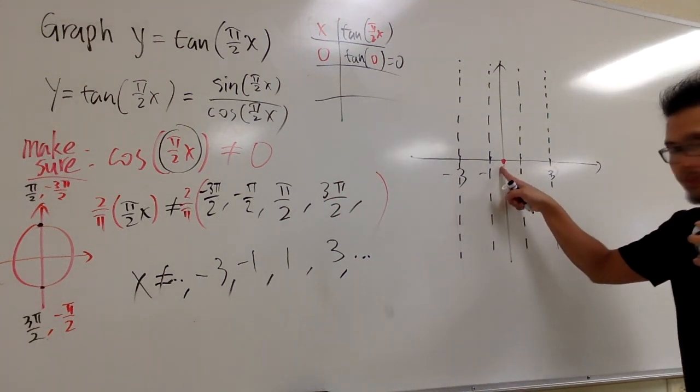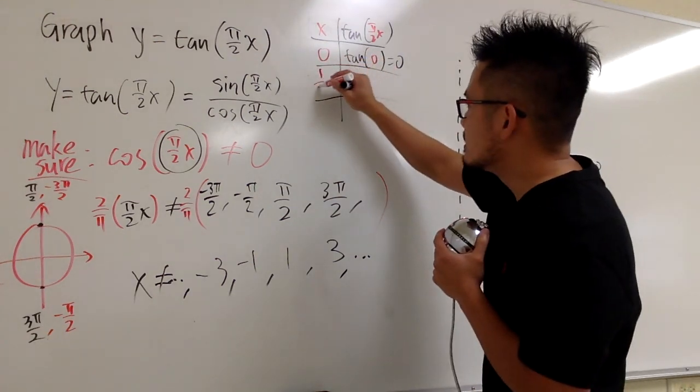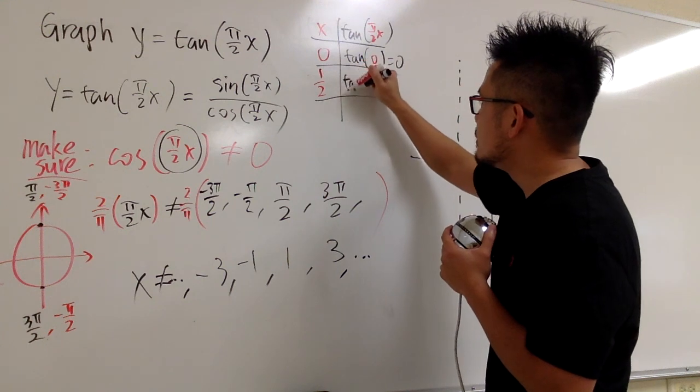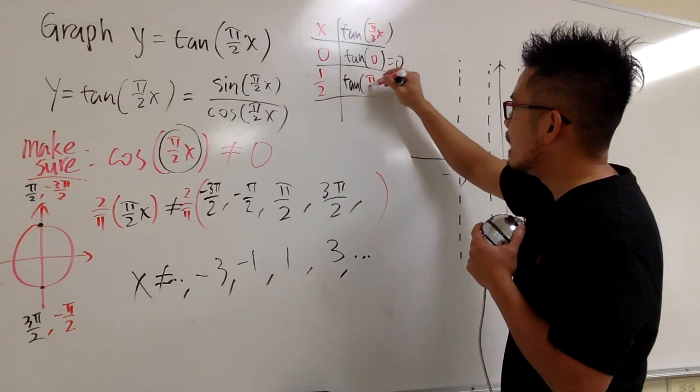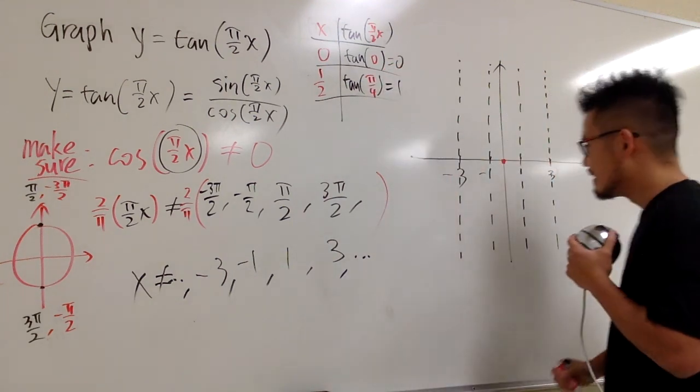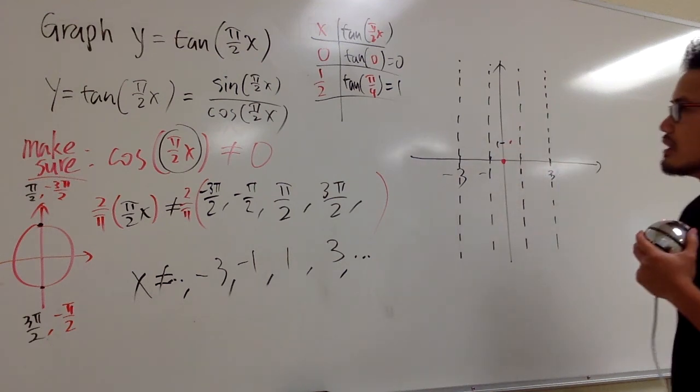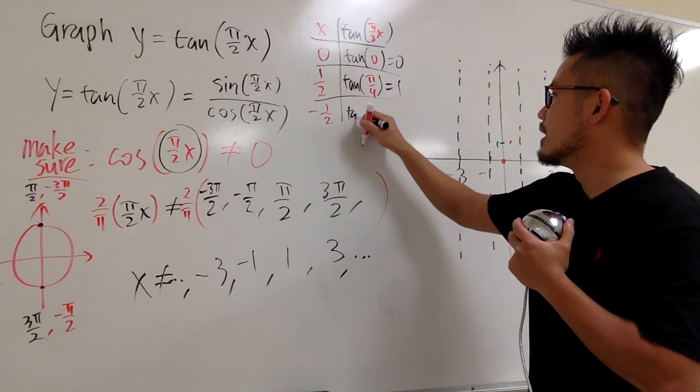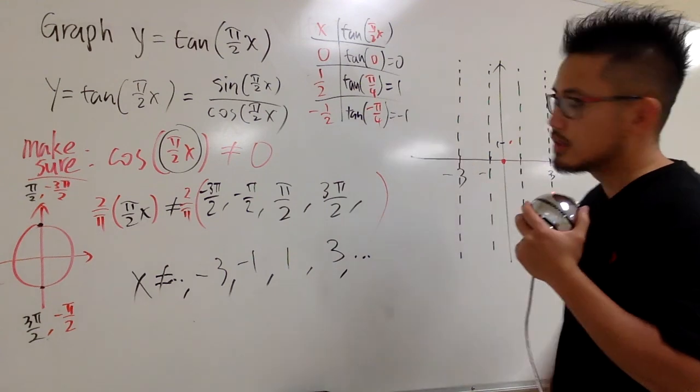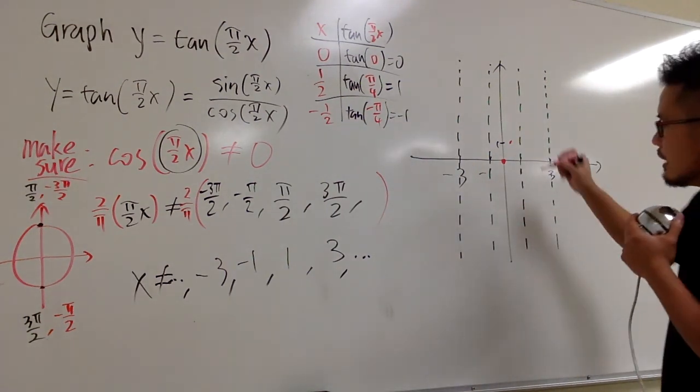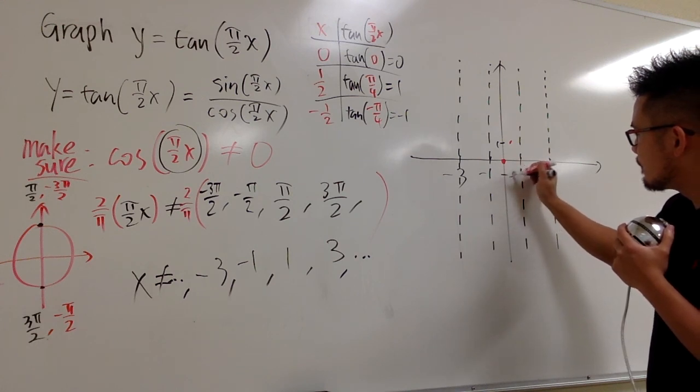And what should I plug in next? This is zero for the x value, this is 1 for the x value. How about let's plug in 1 half for the x value. When x is 1 half, we get tangent of 1 half inside - you get pi over 2 times 1 half, that would be pi over 4. That's 1. 1 half is here, let's just say this is 1, so you have a point here. And then plug in negative 1 half, you get tangent of negative pi over 4, and this is negative 1. Negative 1 half for the x and negative 1 for the y.